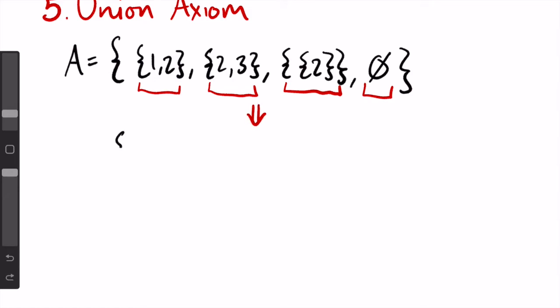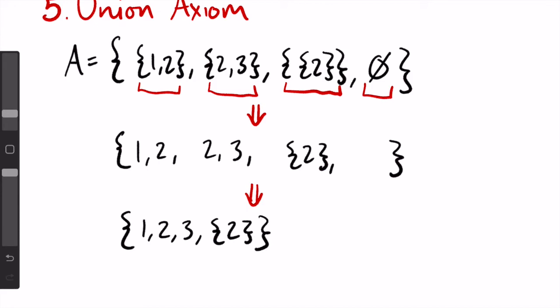So this would become the set of 1, 2, 2, 3, the set of 2, and nothing, since there is nothing inside the empty set. Then we get rid of the duplicate terms because we don't need them. Note that we do get rid of 2, but we don't get rid of the set of 2 because the set of 2 is different from 2. So the only duplicate we have in this example is just 2. This set that we have now, 1, 2, 3, and the set of 2, is called the union of a, or the union of all the sets in a.